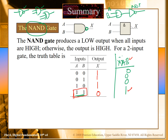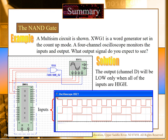In the NAND gate, when both inputs are high we will get a low output; for all other cases we will get a high output. In Boolean form, for the AND gate the expression is A dot B, so for the NAND gate we just put a bar on top of that. You can go through the waveform examples.